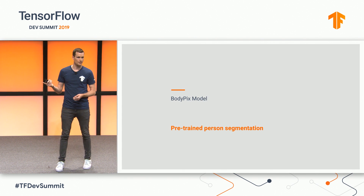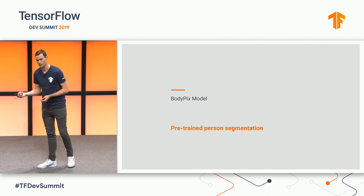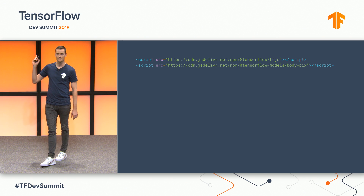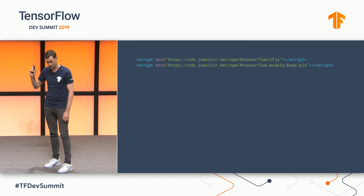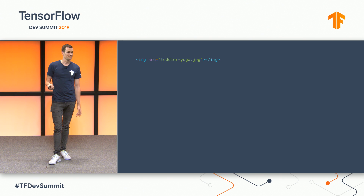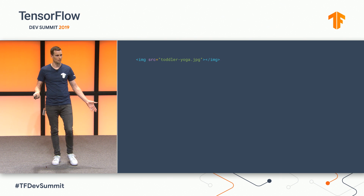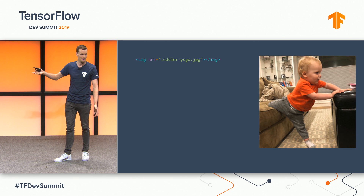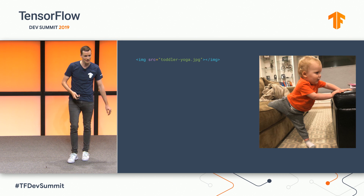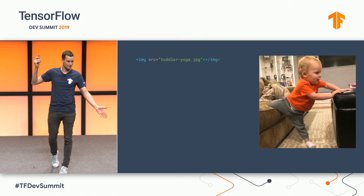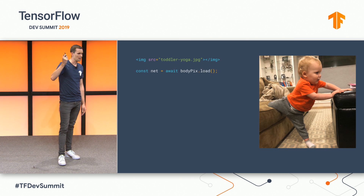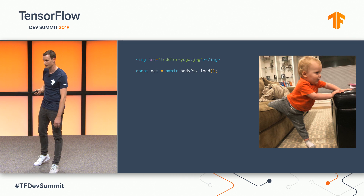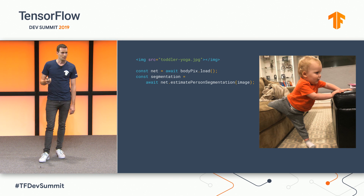The first model is BodyPix. We were actually showcasing this at our booth, and I want to show you how easy it is to use this model. The first thing we need to do is include the library and our BodyPix model — this can be done with our pre-compiled scripts, so it's two simple imports. The next step is to create an image in the DOM. I have a picture of my toddler Frank trying to do yoga. The first thing to do is load the BodyPix model, which is a simple one-line call.